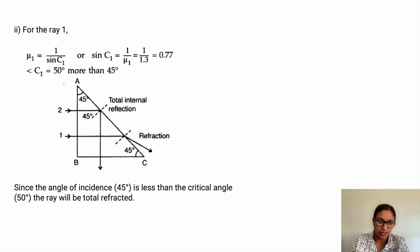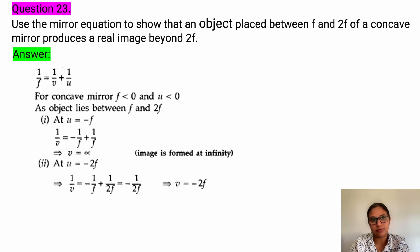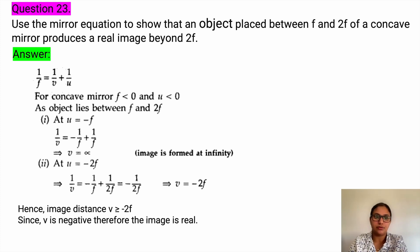When drawing this diagram, make sure to draw an arrow in each diagram and mark all the angles to get complete marks. Question number 23: use the mirror equation to show that an object placed between f and 2f of a concave mirror produces a real image beyond 2f. Using mirror formula 1 by f equals 1 by v plus 1 by u — for a concave mirror, when u is between minus f and minus 2f, the image distance v is greater than or equal to minus 2f, confirming the image is real and beyond 2f.